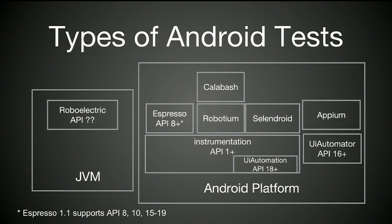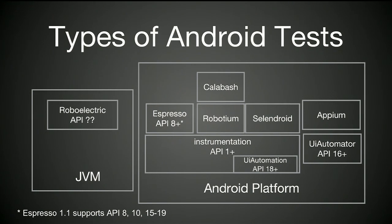There are other frameworks for testing on top of the Android platform, from Espresso to Robotium to Calabash. There are different ways to test even within the Android platform. There are instrumentation tests, which have been there since API 1, and there's a newer form of testing that's been there since API 16.